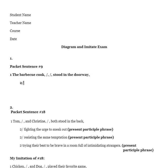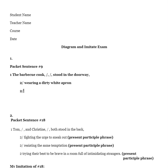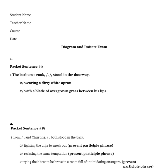It looks like this is a comma slash two medial position free modifiers here, comma slash comma, and the verb on the other side, stood in the doorway, comma. It's a two slash. I know this is a long video, but this is what yours is going to look like. Wearing a dirty white apron, another two slash, with a blade of overgrown grass between his lips.